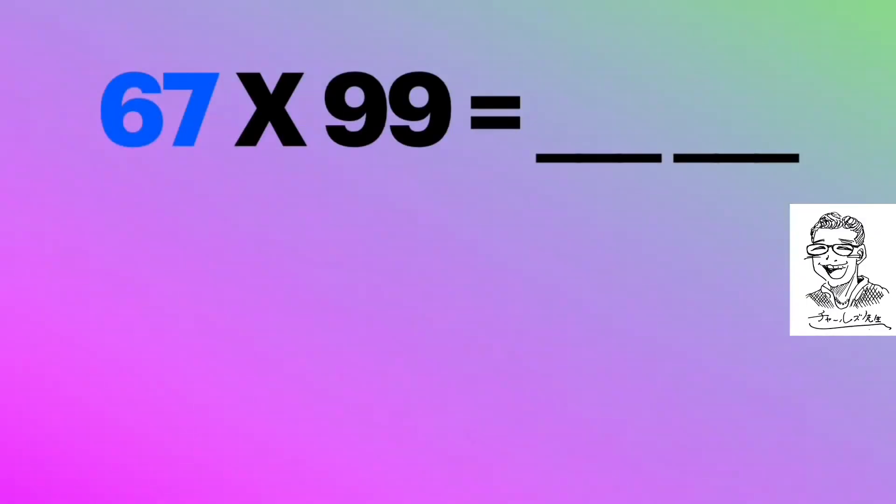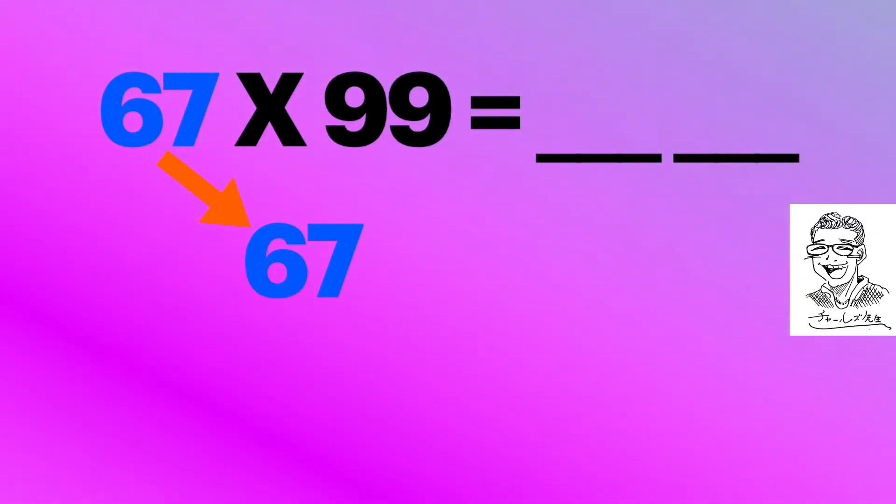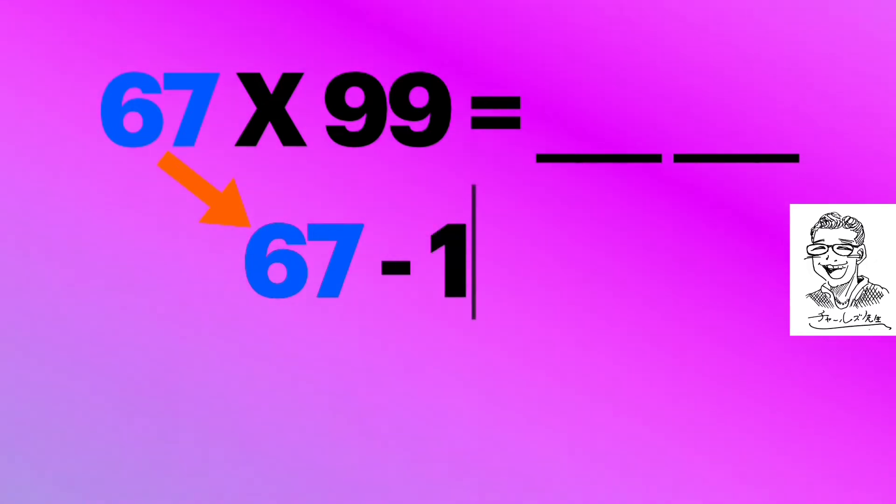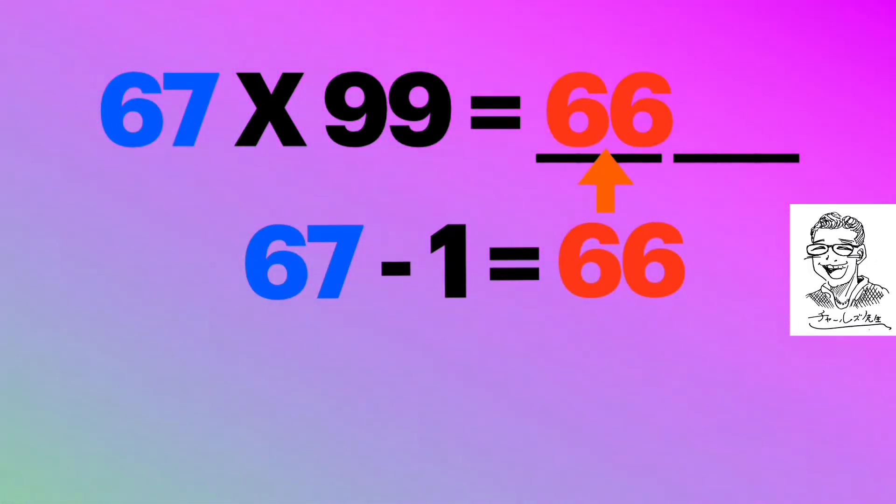Now let's try another one. 67 times 99. So 67 minus 1 equals 66. And those are the first two digits of the answer.